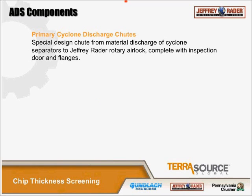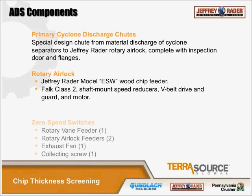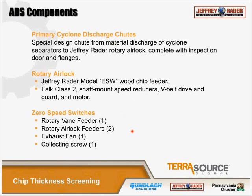The operation of the system depends on differential pressure across the cyclone, which is measured and monitored through a control panel to open or close the damper on the fan to optimize performance. Underneath the cyclone there's a discharge chute specially designed to break the vortex going through the cyclone so chips fall out and don't get carried back up into the top. This feeds into a typical ESW-type wood chip feeder used in pneumatic systems. The system usually has zero-speed switches for the rotary vane feeder, infeed zone, rotary airlock feeders, exhaust fan, and the screw feeding the ADS system.